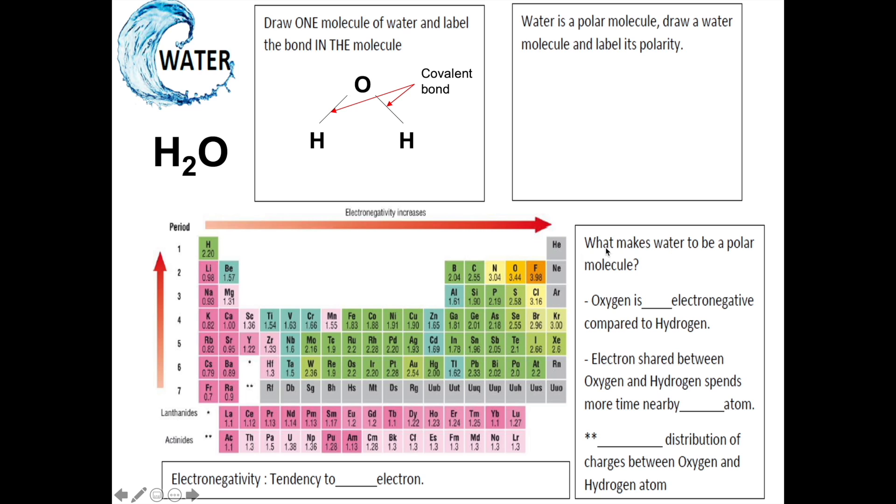What makes water to become a polar molecule? All this can be easily revealed when we look at the periodic table. As you can see, as you go across the periodic table, the electronegativity increases. What is meant by electronegativity? Electronegativity refers to the tendency of an element to attract or to pull electron.